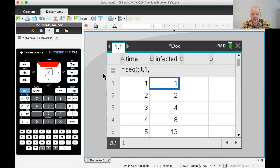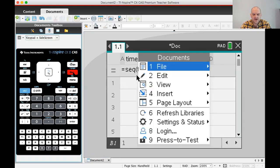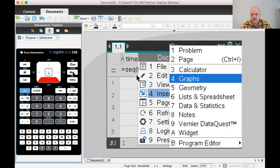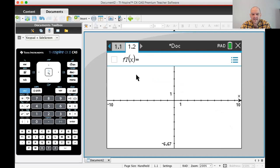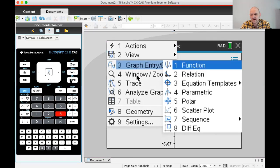What we want to do now is make a scatter plot on the graph page. I'm going to insert a graphing page, doc, 4, graph. I need to change this to scatter plot, so menu 3, and then option 6 is scatter plot.